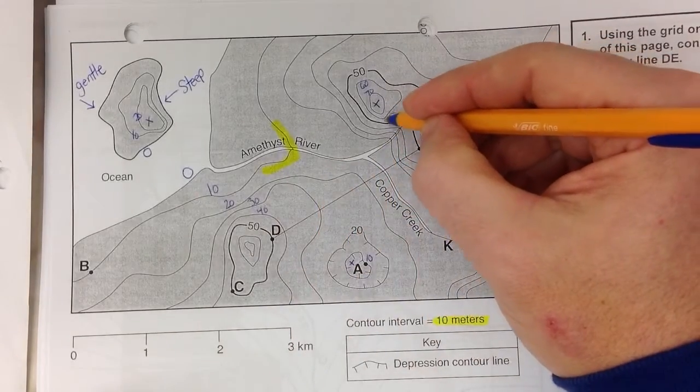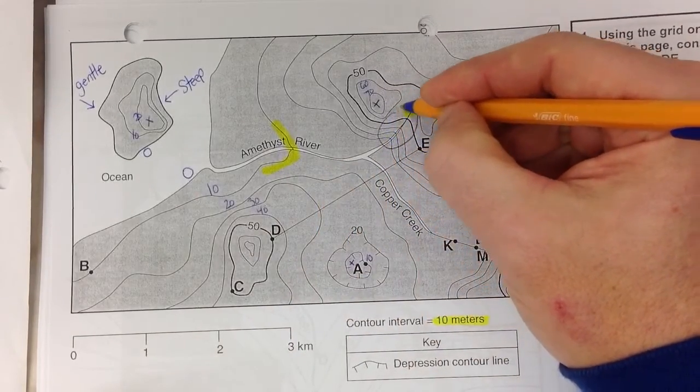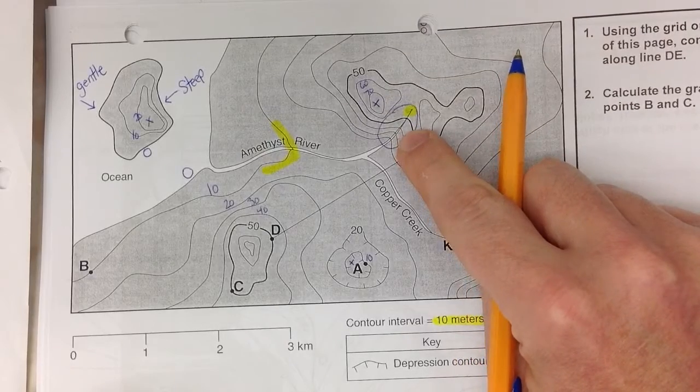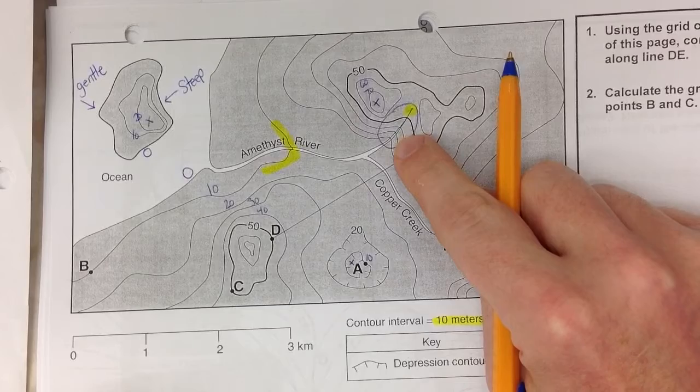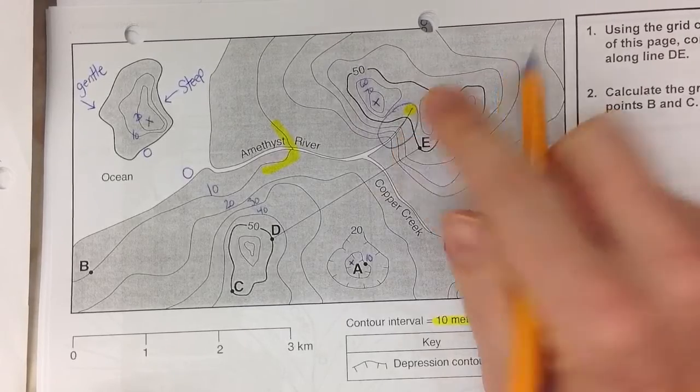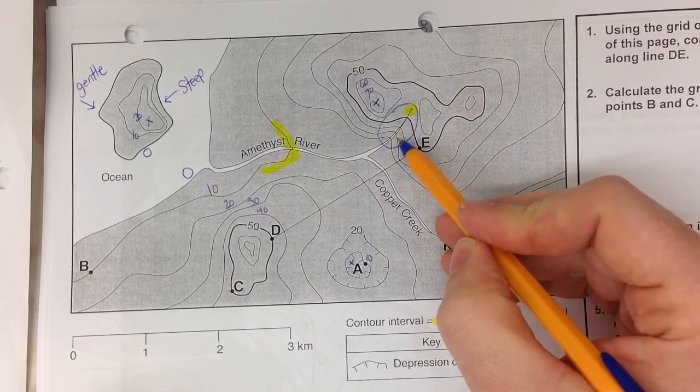And actually, right here, right at the source, it's actually flowing quite fast because the lines are really steep. The lines are steep. The slope is steep. The lines are close together. That's a good indicator of some fast-moving water there.